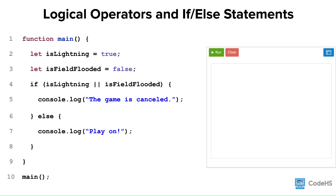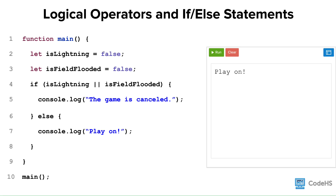Because Boolean expressions with logical operators evaluate to true or false, we can use them as conditionals of an if-else statement. This program states that if there is lightning or if the field is flooded, the game is cancelled. In this example, isLightning is true, so when we run the program, the game is cancelled and is printed to the console. However, if both these variables are false, then playOn will be printed to the console.